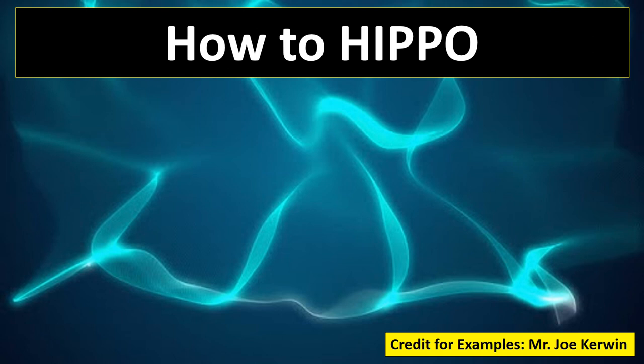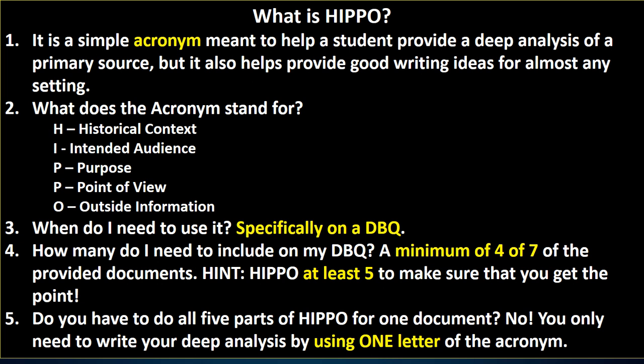First off, let's talk about exactly what HIPPO represents, what it means. It's an acronym meant to help you provide a deep analysis of a primary source, but it also helps provide good writing ideas for almost any setting. We're going to start with the H — historical context — the events that led up to a document and that kind of surround the document as well.